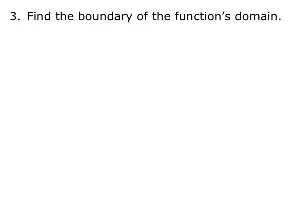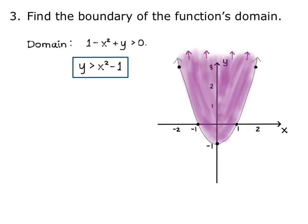Next, we are asked to find the boundary of the function's domain. Remember, the boundary is all points that, if you drew an infinitely small disk around the point, the disk would contain points both inside and outside of the domain region. We already found that the domain is y greater than x squared minus 1, which translates to all points above the parabola y equals x squared minus 1.